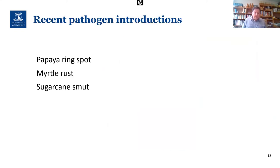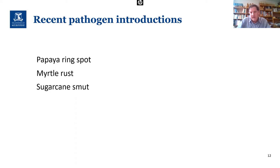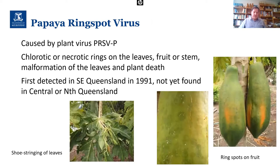Those are a few exotic pathogens we'd like to keep out. Now I have a couple of examples of recent pathogen introductions to show how they've come in, established themselves, and become a matter of containment rather than eradication. One is papaya ringspot virus, caused by a potyvirus PRSV-P strain. It produces necrotic rings on the leaves, fruit, or stem, eventually causing malformation of the leaves — called shoestringing — and plant death. This is quite common in Thailand.